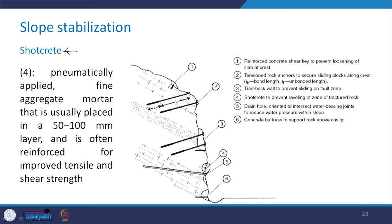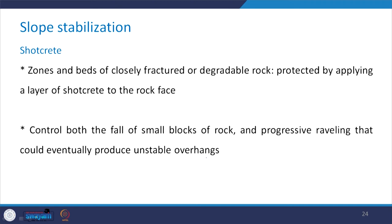Shotcrete is also used in combination with rock bolting in case of foundations on weak rocks. The zones and beds of closely fractured or degradable rock are protected by applying a layer of shotcrete to the rock face. Provision of shotcrete controls both the fall of small blocks of rock and progressive raveling, which could eventually produce unstable overhangs. It provides very little support against sliding for the overall slope; the primary function of shotcrete is surface protection.